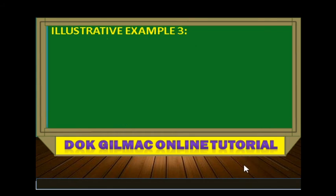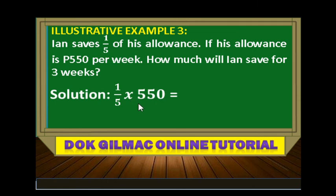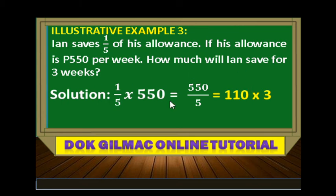Illustrative example number 3: Ian saves one-fifth of his allowance. If his allowance is 550 pesos per week, how much will Ian save for 3 weeks? Solution: one-fifth times 550 is equal to 550 all over 5, which is simply equal to 110. Then since Ian will save for 3 weeks, we have 110 times 3. So Ian saves 330 pesos for 3 weeks.